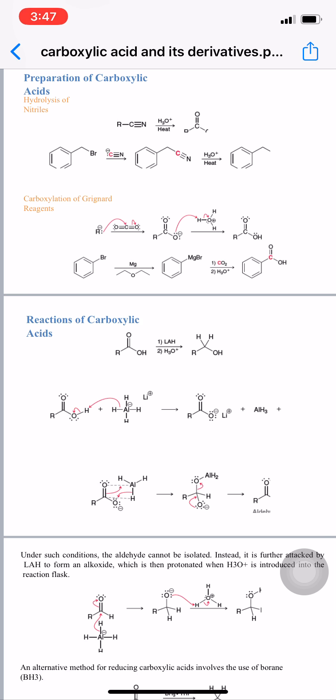Another example is carboxylation of a Grignard reagent. Bromobenzene interacts with magnesium to form a Grignard reagent (the magnesium bromide complex), which is further reacted with carbon dioxide and water to form benzoic acid.